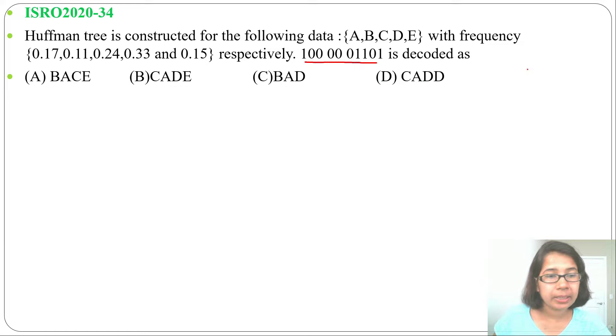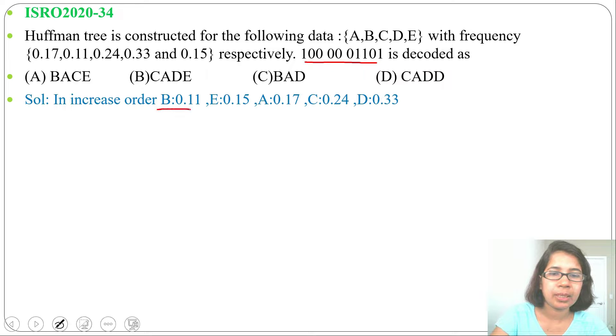Let me write all the frequency in increasing order: first will be 0.11 for B, then for E 0.15, for A 0.17, for C 0.24, for D 0.33.